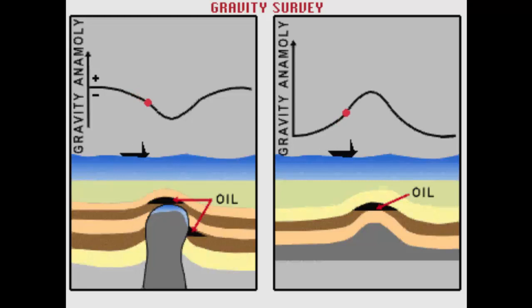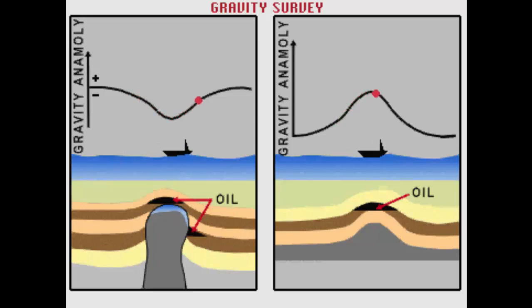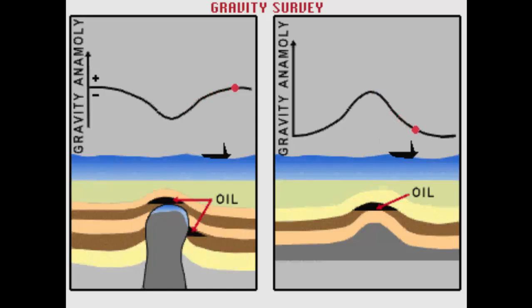A grid of such survey lines allows us to map the anomalies across the area. The analysis of these anomaly maps gives us an indication of the underlying rock types and structures.